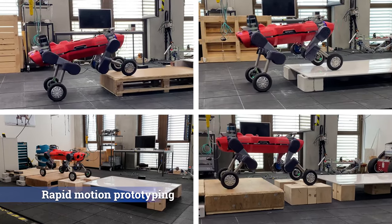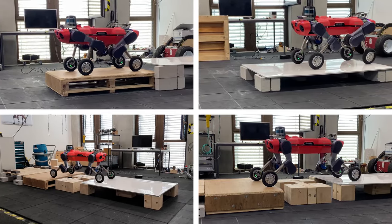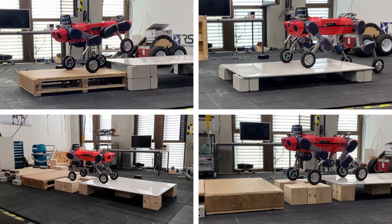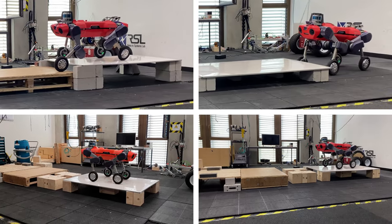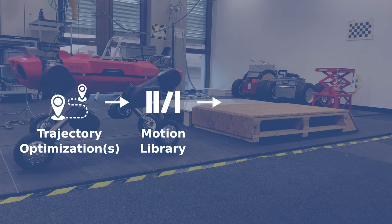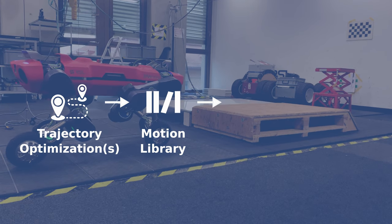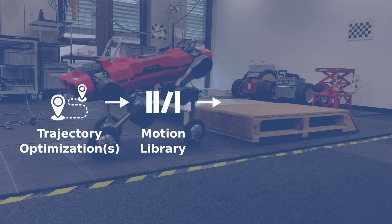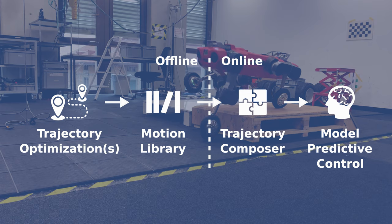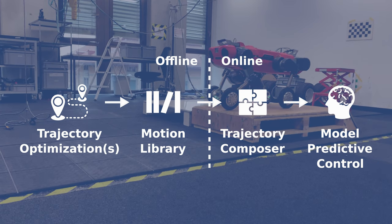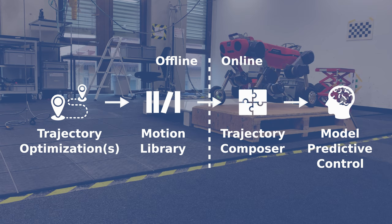Given the task of crossing an obstacle as shown here, how can the robot find an optimal motion while considering all physical constraints? First, trajectory optimization algorithms transform high-level tasks into dynamically feasible motions, which are stored in the motion library. Individual motions from this library are composed and fed into the MPC as a cost that optimizes the whole body trajectory over a shorter time horizon.